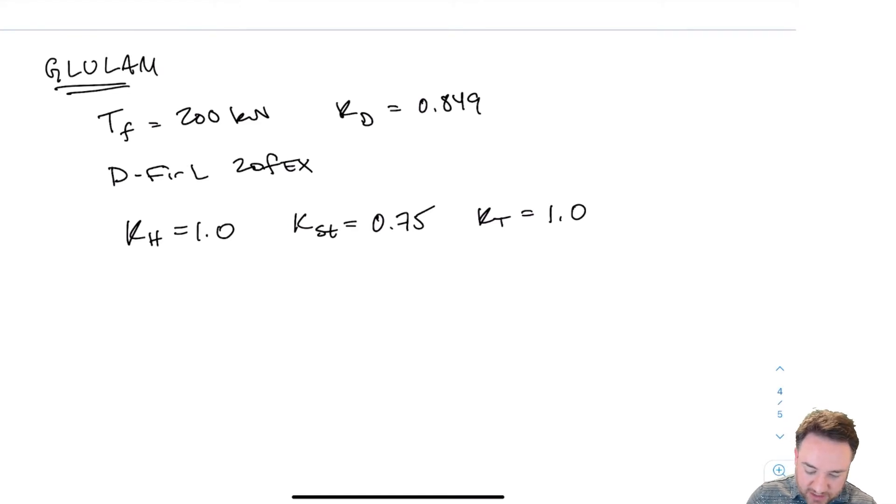KST is going to be 0.75 and KT is going to be 1.0. If we want to get a target strength from the table, we can take our TF and divide by KD, by KH, by KST, and by KT. If we do that, we're going to get a target of 314 kilonewtons, where KD is 0.849, KST is 0.75, and KT is 1.